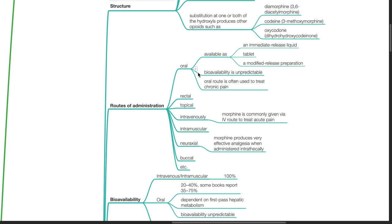Regarding the oral route, morphine is available as an immediate release liquid, tablet or modified release preparation. Bioavailability is unpredictable. Oral route is often used to treat chronic pain.